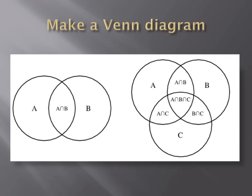Venn diagrams are an excellent tool that you can use to describe what key concepts have in common and where they differ. The way that Venn diagrams work is illustrated above. Any overlapping segments of a Venn diagram would represent qualities of the two topics that are similar. Any non-overlapping segments would represent characteristics that are distinct.